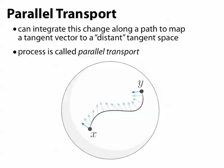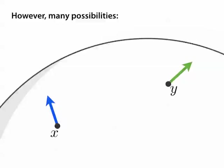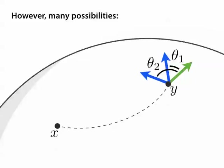On a curved surface, there are a lot of different paths we can take to get from one point to another, and unless we were really careful when we defined our connection, there's no reason to expect that we're going to get the same result for all these different paths.